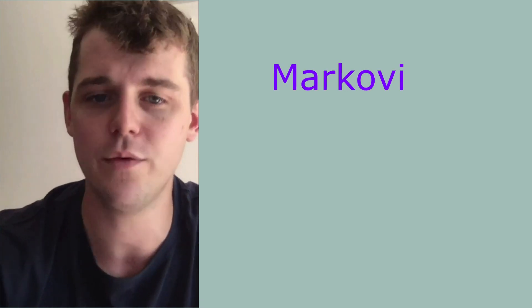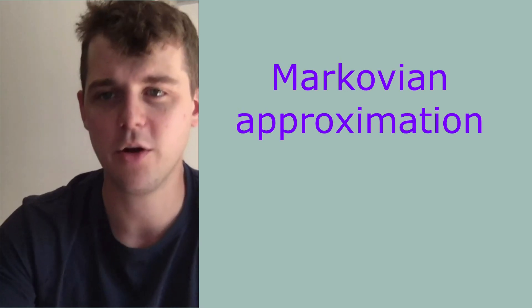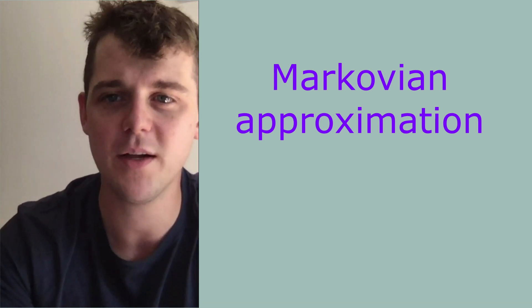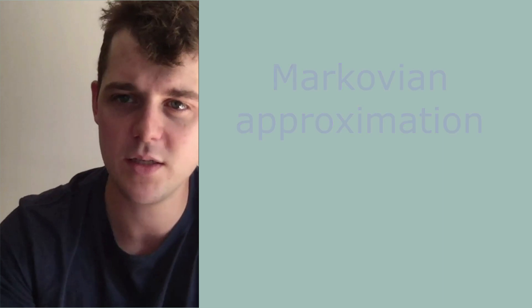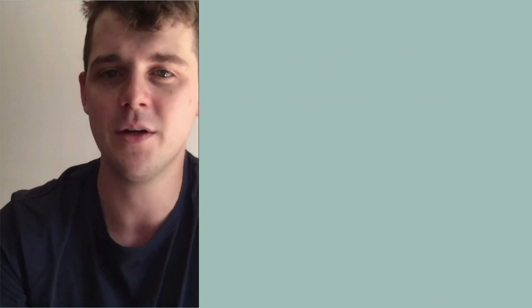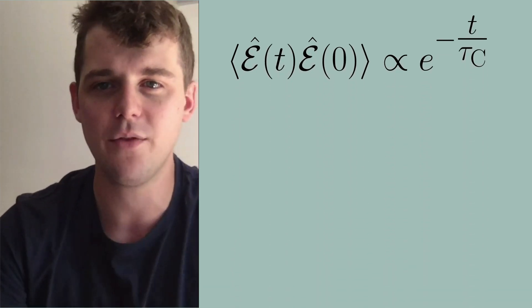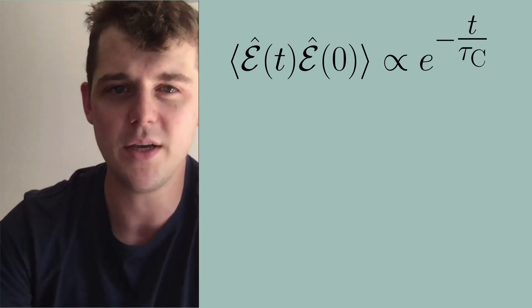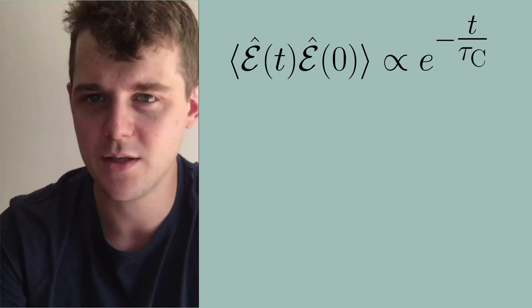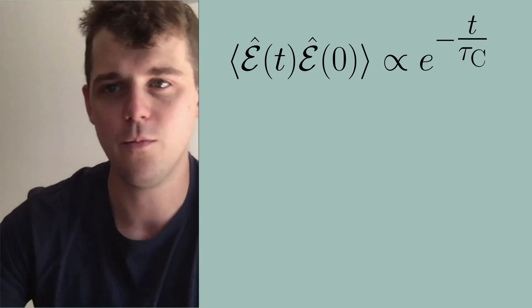What we often do with the Born approximation is take an additional approximation to make progress, called the Markovian approximation. The logic of the Markovian approximation is that it allows us to simplify this equation by eliminating the s-dependence in the convolution integral. Basically, we want to convert the integral over t minus s so that it just depends on the parameter t, making this a very simple ordinary differential equation. We do this by assuming that the thermal bath has some correlation time tau_c associated with it, meaning there's some damping on that timescale.